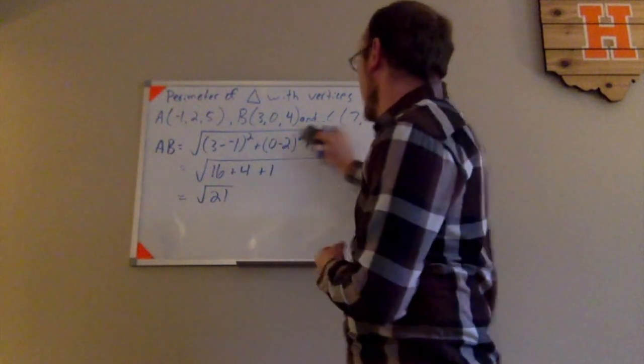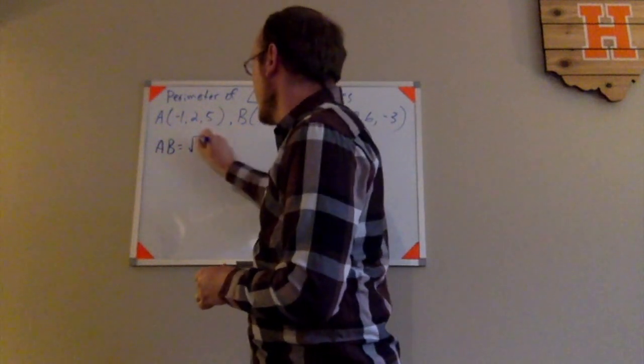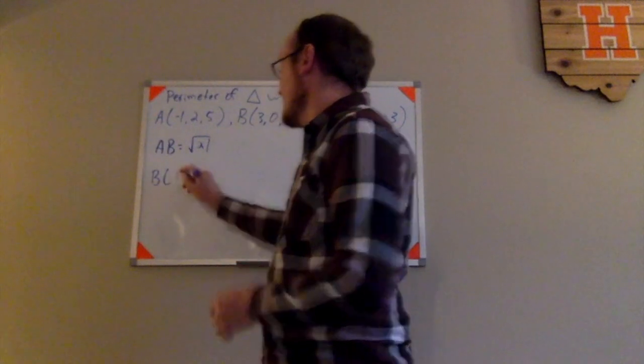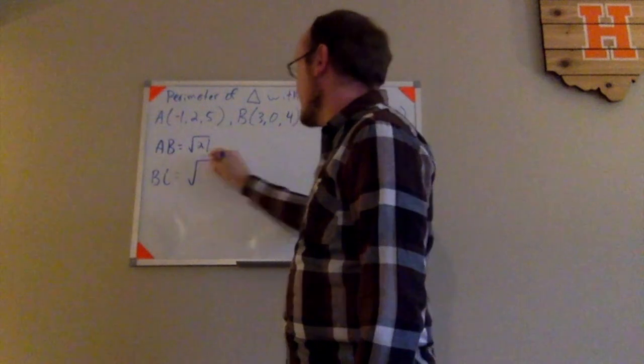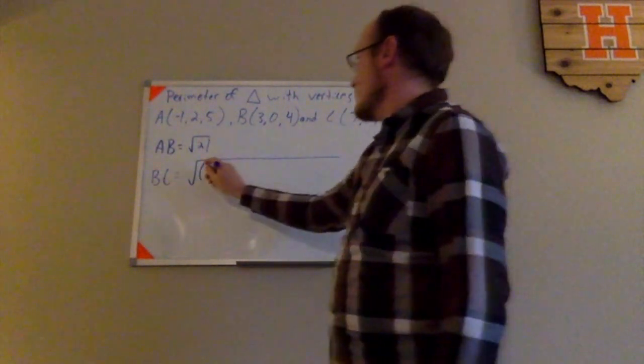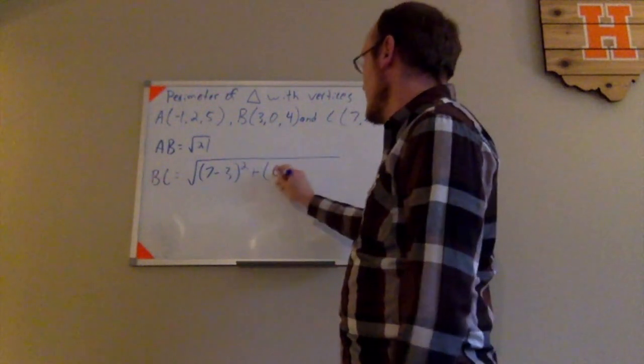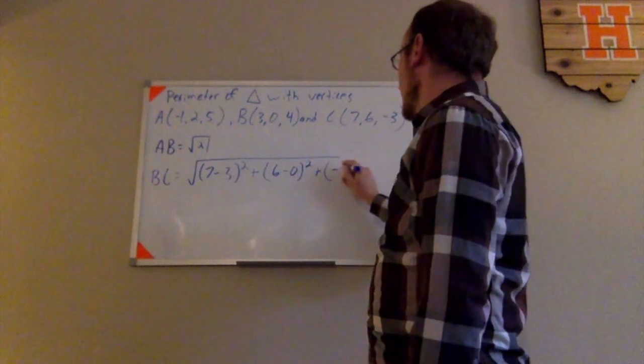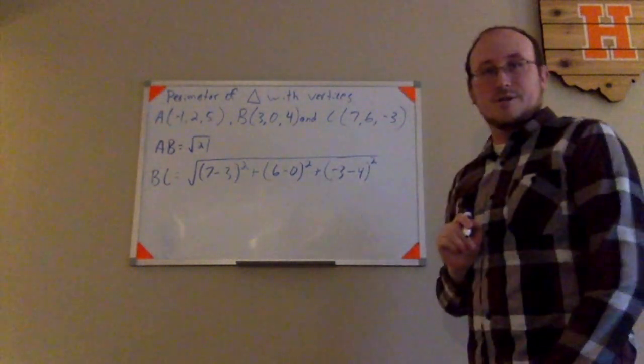And then we'll go ahead and we will work out a different one now. So AB was the square root of 21. Let's remember that there. Now we have to do BC. So we'll use B and C and do the same thing. We have the square root of (7 - 3)² plus (6 - 0)² plus (-3 - 4)² like so.